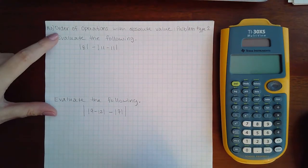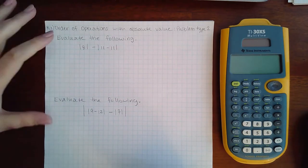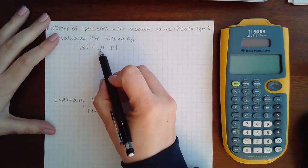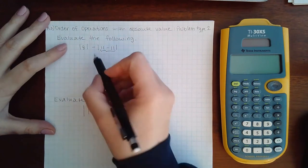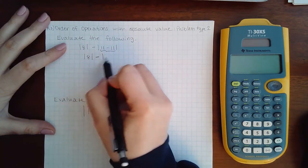This is our point 3 order of operations with absolute value problem type 2. We do have something to do inside these bars. We must do that first. So I'm going to bring everything down.